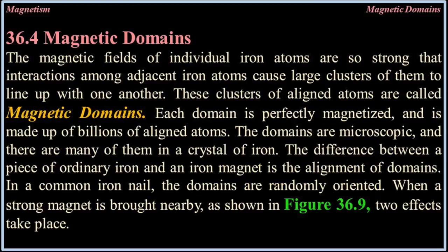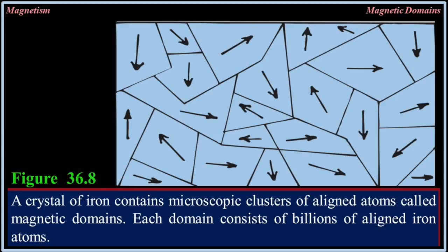36.4 Magnetic domains. The magnetic fields of individual iron atoms are so strong that interactions among adjacent iron atoms cause large clusters of them to line up with one another. These clusters of aligned atoms are called magnetic domains. Each domain is perfectly magnetized and is made up of billions of aligned atoms. The domains are microscopic and there are many of them in a crystal of iron. The difference between a piece of ordinary iron and an iron magnet is the alignment of domains. In a common iron nail, the domains are randomly oriented. A crystal of iron contains microscopic clusters of aligned atoms called magnetic domains, each consisting of billions of aligned iron atoms.